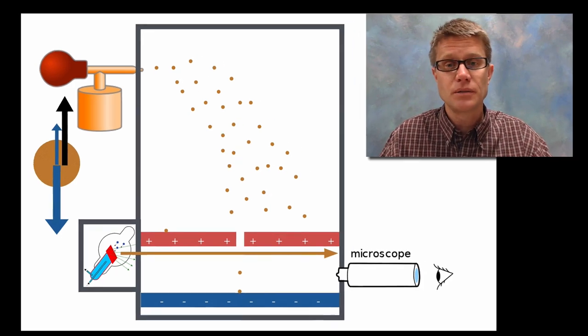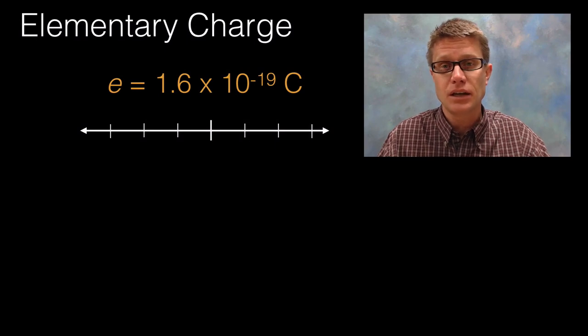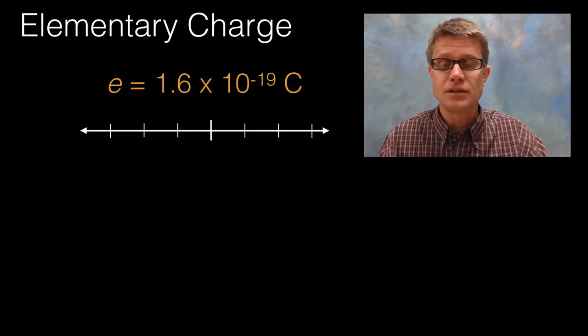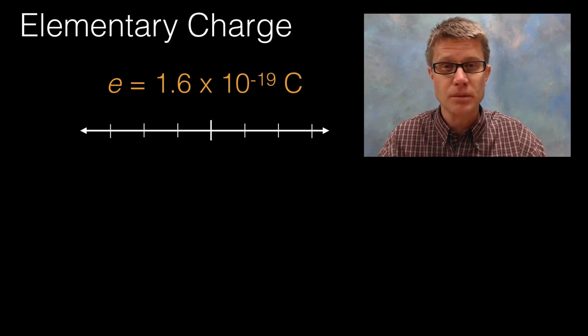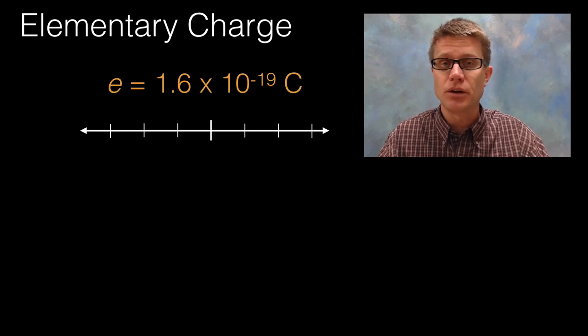He was able to calculate based on the size of that droplet how much is this elementary charge. And so he determined it to be 1.6 times 10 to the negative 19 coulombs. And so now we refer to that as the elementary charge. And he was like 1% off the value. So it is an incredible experiment.